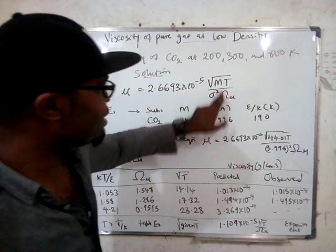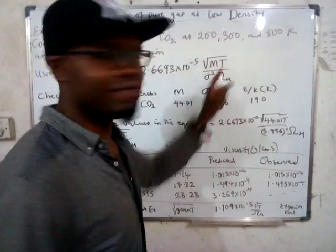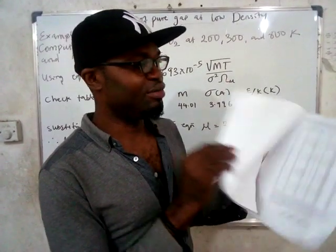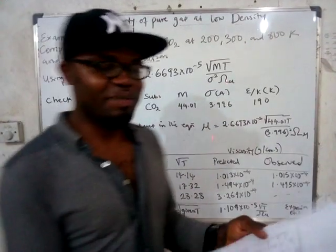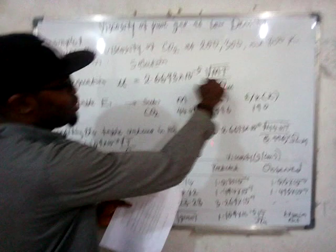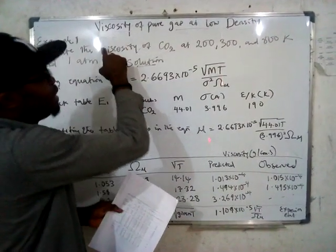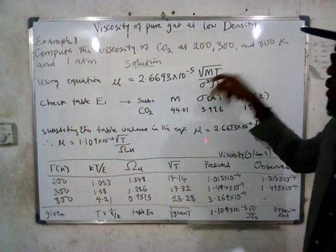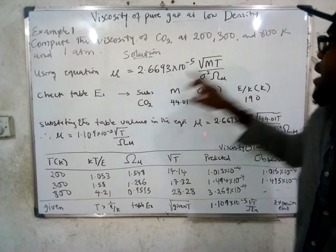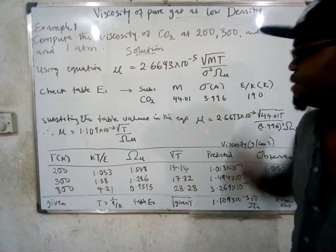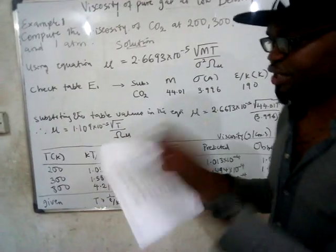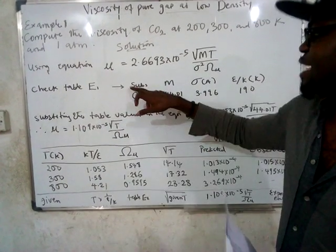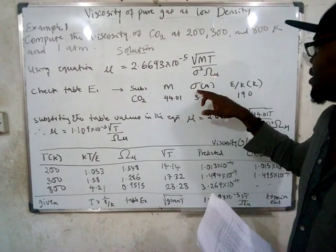Now, having this formula, how do we get the values to substitute in order to solve it? That's why you need Table E1 and Table E2 — with just those two tables it becomes very simple. To get all the quantities needed to solve for viscosity, go to Table E1. Table E1 is the first table and it has column headings like substance, molecular mass, and other parameters.